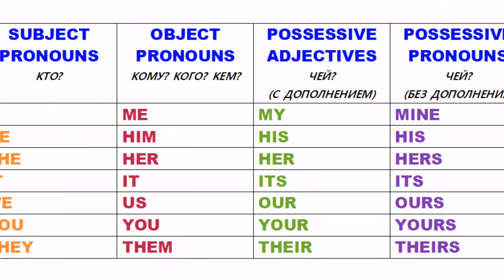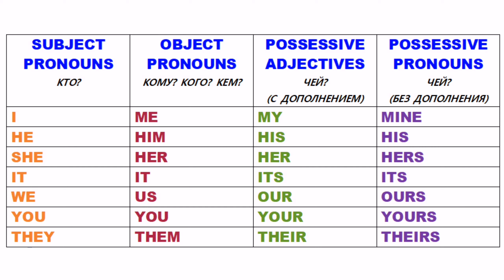Существуют три основные формы местоимений. Перед вами таблица. Первая колонка — subject pronouns, то есть личные местоимения, отвечающие на вопрос «кто». Они всегда стоят в начале предложения — это исполнитель действия. Итак: I — я, he — он, she — она, it — это оно. It используется для неодушевлённых предметов и животных — всего, что не люди. He и she — он и она — говорится только о людях. It — это все остальное: и собаки, и коты, и книжки.